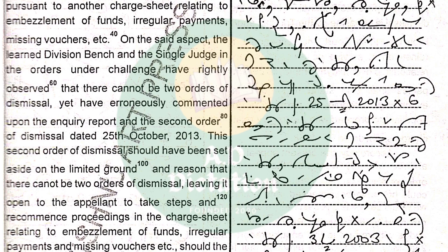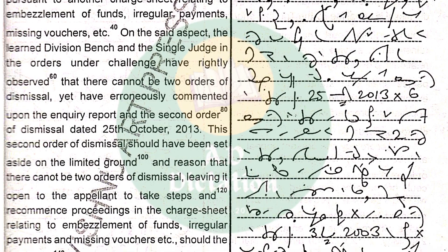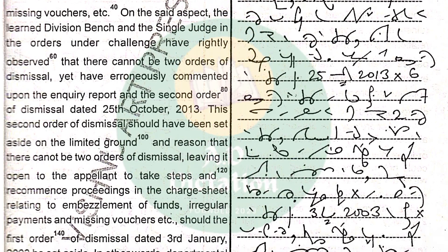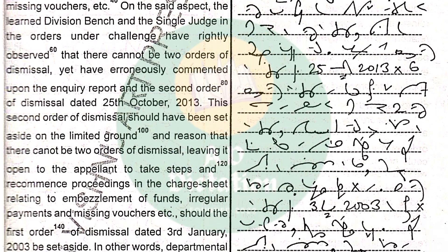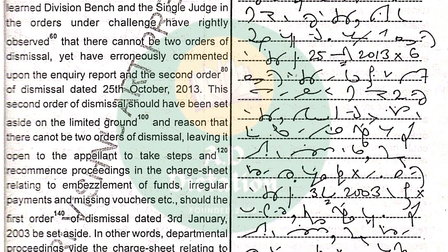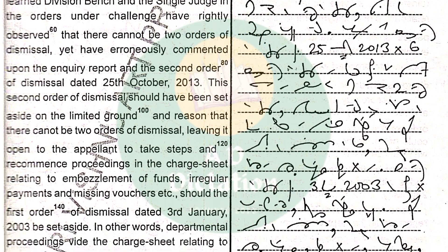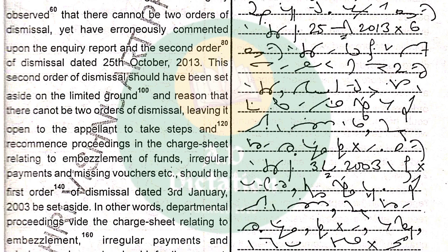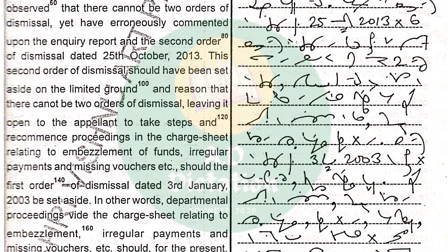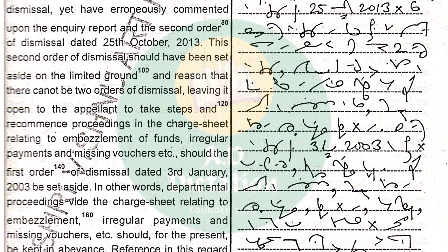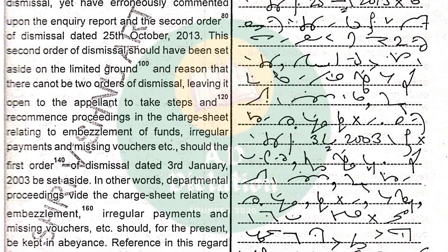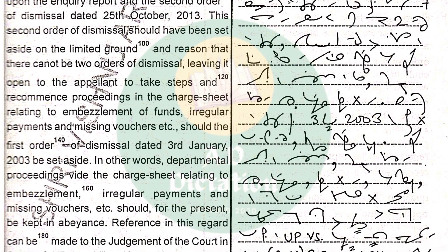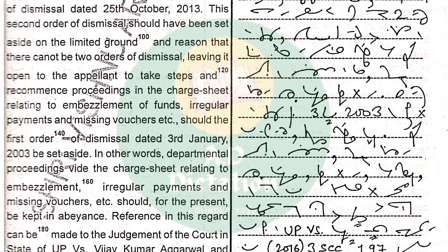This second order of dismissal should have been set aside on the limited ground and reason that there cannot be two orders of dismissal, leaving it open to the appellant to take steps and recommence proceedings in the chart sheet relating to embezzlement of funds, irregular payments, and missing vouchers, etc., should the first order of dismissal dated 3rd January 2003 be set aside.